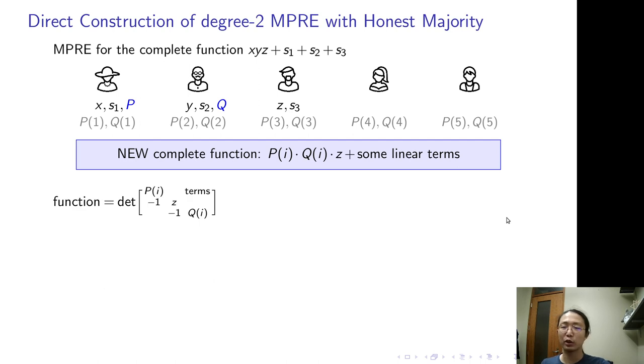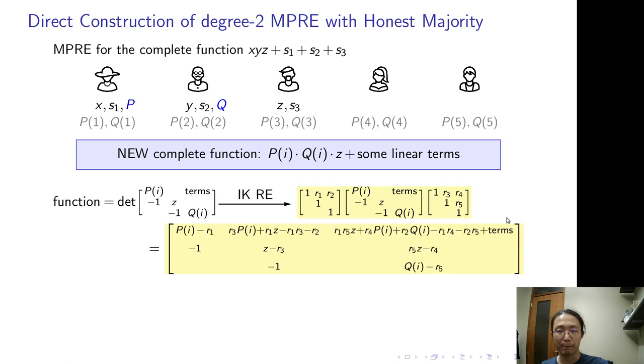Let's see how the leakage can help us. Write down the new complete function as the determinant of this matrix. Then apply IK randomizing encoding. Expand all terms in the encoding matrix. Among them, observe that there is only one degree 3 term. So the first question - how should we handle this degree 3 term?